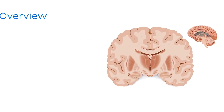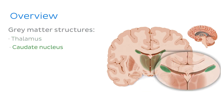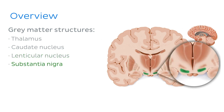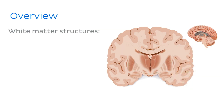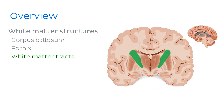First, we'll discuss grey matter structures, including the thalamus, the caudate nucleus, the lenticular nucleus, and the substantia nigra. Then we'll look at white matter structures running through the brain, including the corpus callosum, the fornix, and the white matter tracts travelling between the brain and the spinal cord.